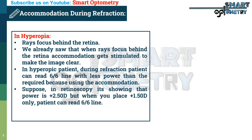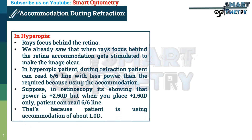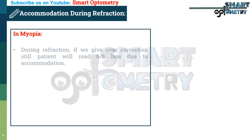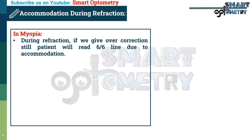For example in retinoscopy, suppose the finding shows a power of plus 2.5 diopters. But when you add only plus 1.5 diopters, the patient can read the 6/6 line — because the patient is using approximately 1 diopter of accommodation. Similarly in myopia, during refraction, if you give overcorrection, the patient will still read the 6/6 line due to use of accommodation.